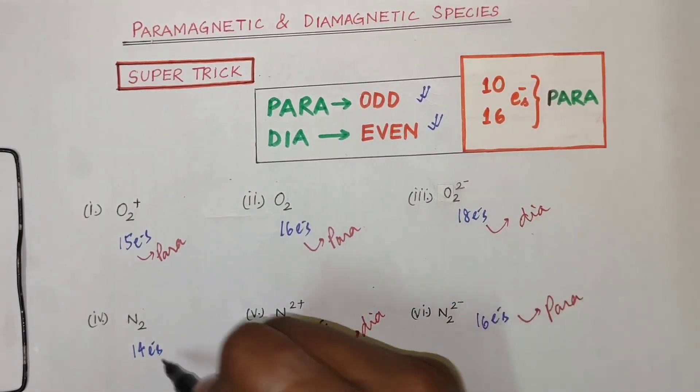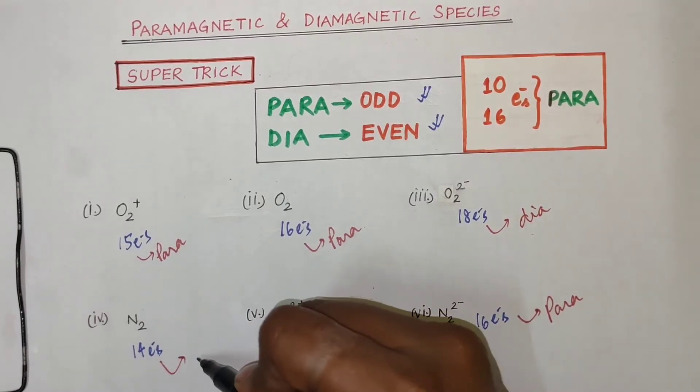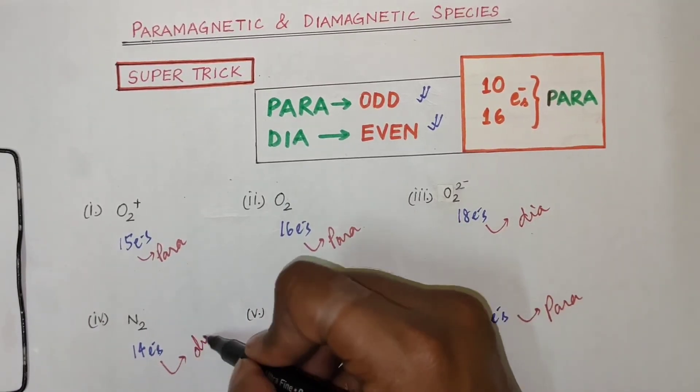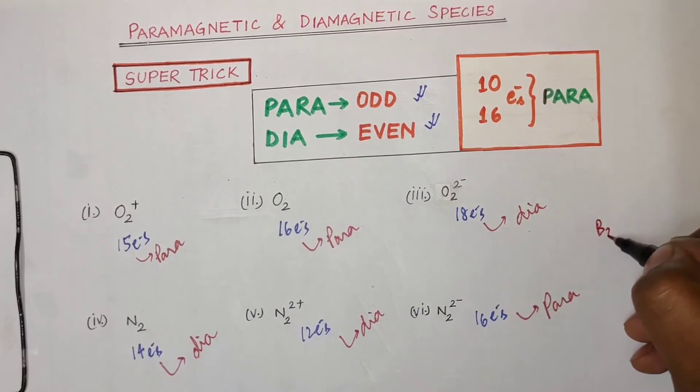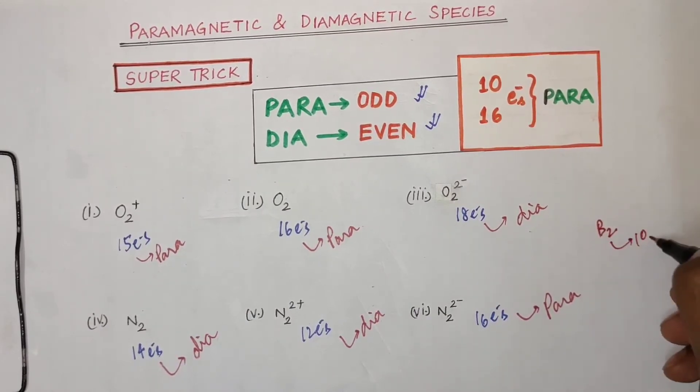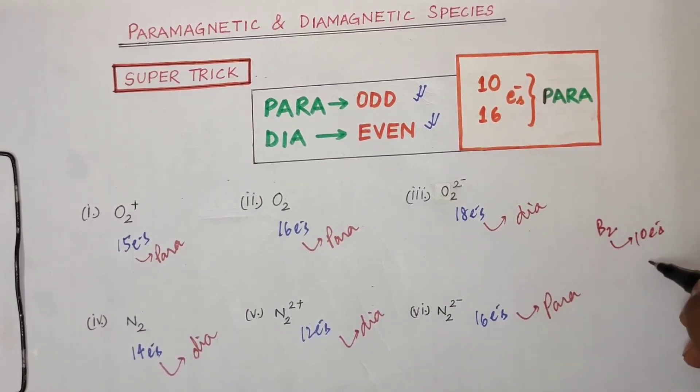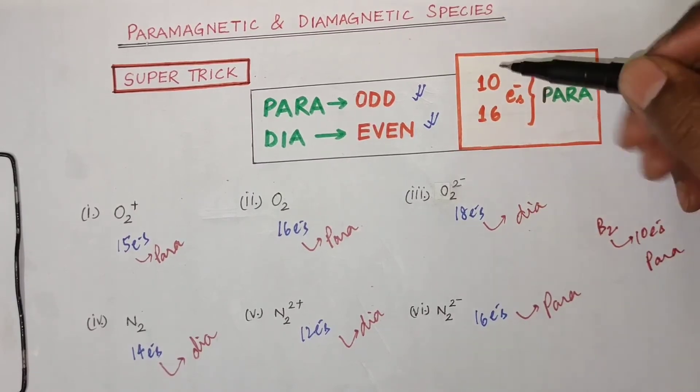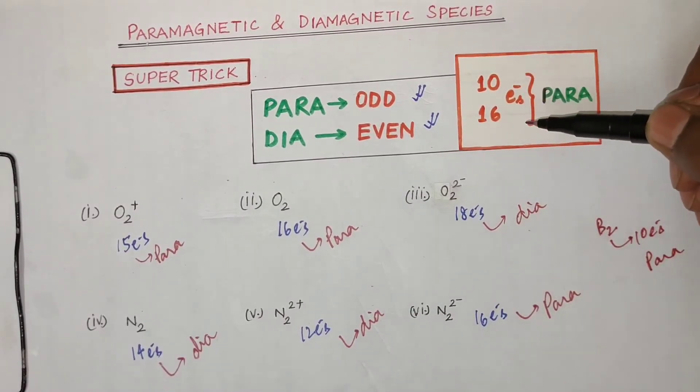Let us just remember 10 and 16 electrons. This is the concept of dia. For example, B2, how many electrons are? 10 electrons. What is it? Para.